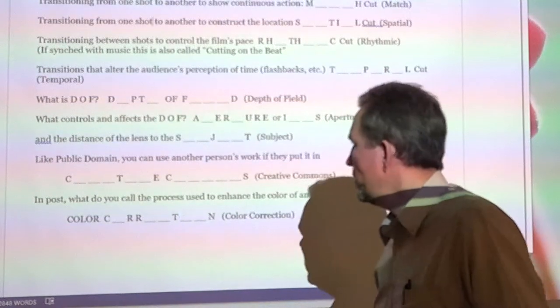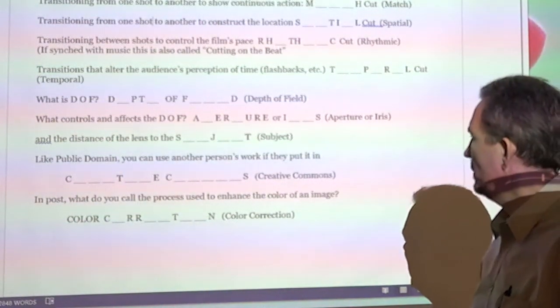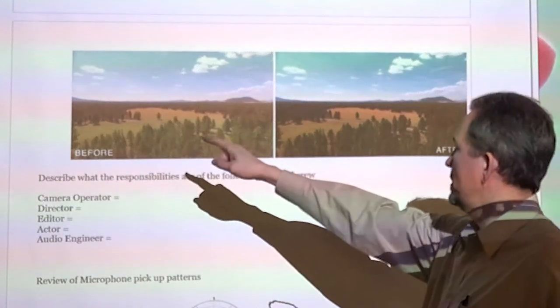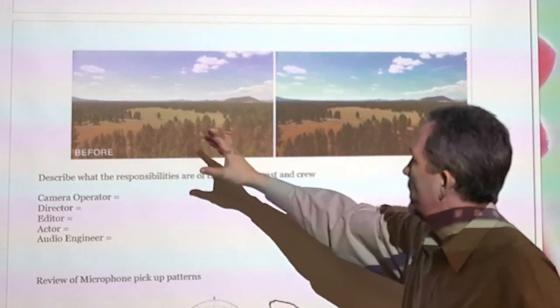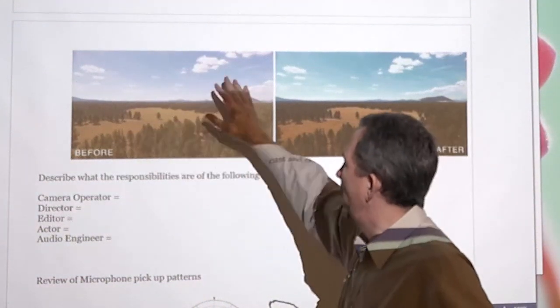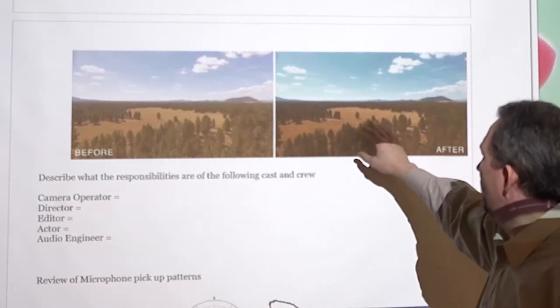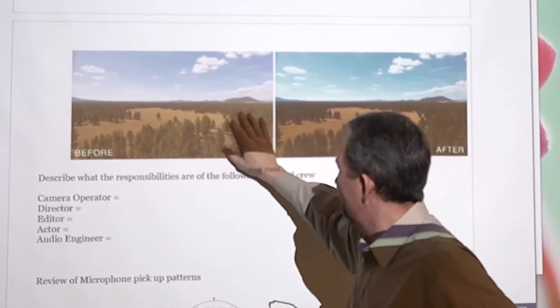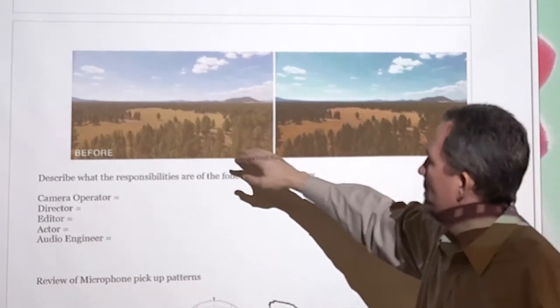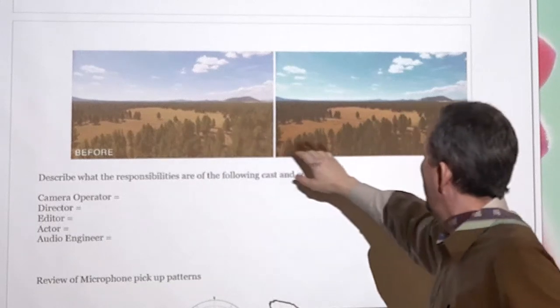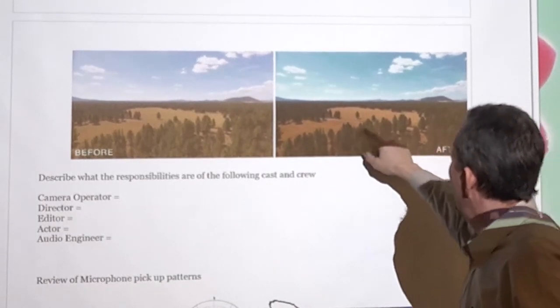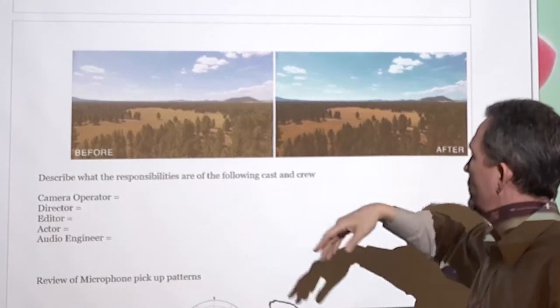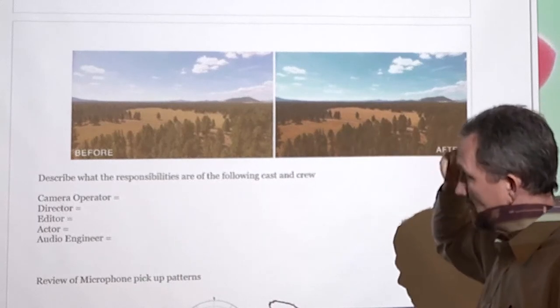In post, what do you call the process used to enhance the color of an image? It's called color correction. Here's an example you can't probably see very well on the screen. But this is the raw footage. And it's got kind of a milky look about it. And then in color correction, they adjusted the contrast mostly. And they got everything that's kind of just in kind of the mid-tone area. They got it darker in contrast. And they made the sky bluer. Anyway, they made everything just pop a little bit better, sharpened it. But anyway, that's called color correction.